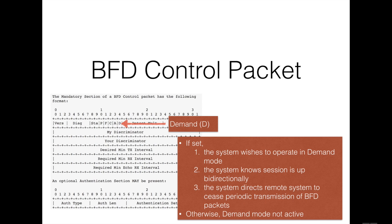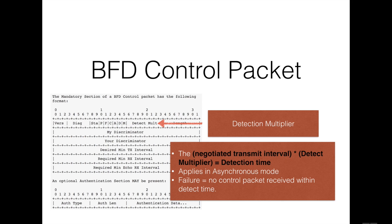The demand field, if set, means the transmitting system wishes to operate in demand mode — it knows that the BFD session is up in both directions and is instructing the remote system to cease transmission of BFD control packets. If clear, the system is operating in asynchronous mode. The detection multiplier field contains a value that is multiplied by the transmit interval to provide a time after which a fault in the forwarding path is declared. When BFD control packets are not received within this time interval, the forwarding path is found to be faulty.